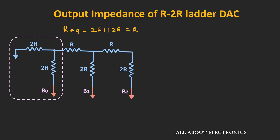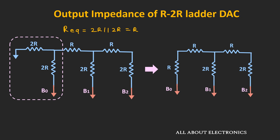We can replace these two resistors by the equivalent resistance R. Looking at the equivalent circuit, these two resistors are in series, and that combination is in parallel with the 2R resistor. The equivalent resistance will be equal to R plus R in parallel with 2R, which gives an equivalent resistance equal to R.